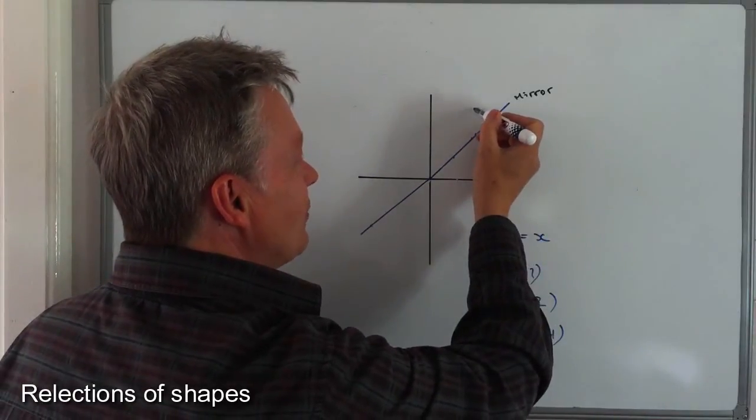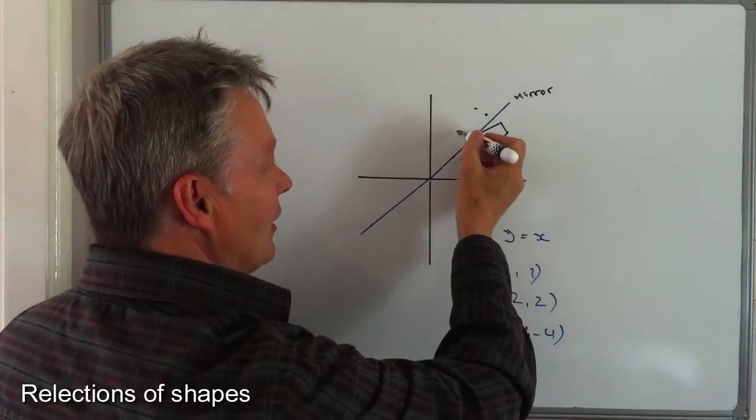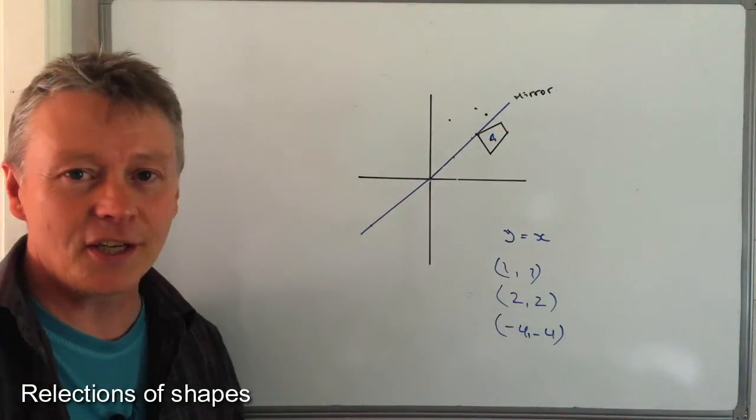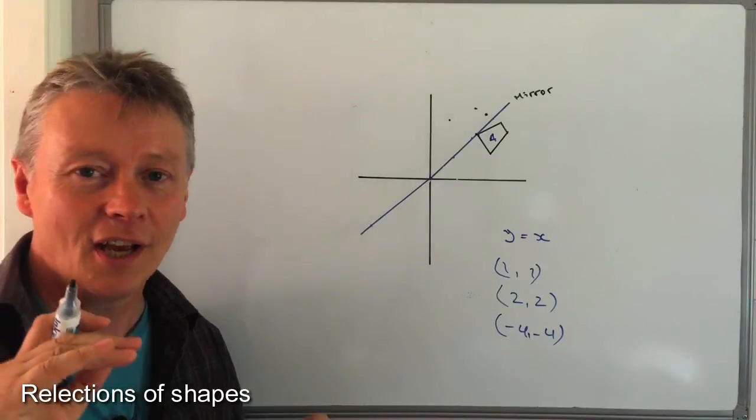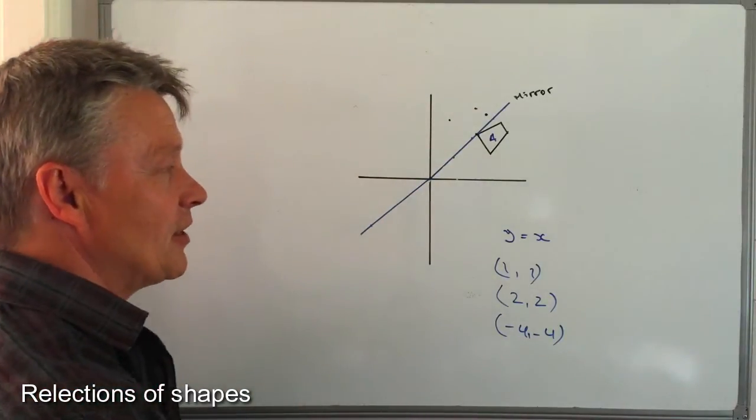So providing you plot very accurately each of these points, you should be able to create a shape which is a true reflection of, in this particular case, shape A.